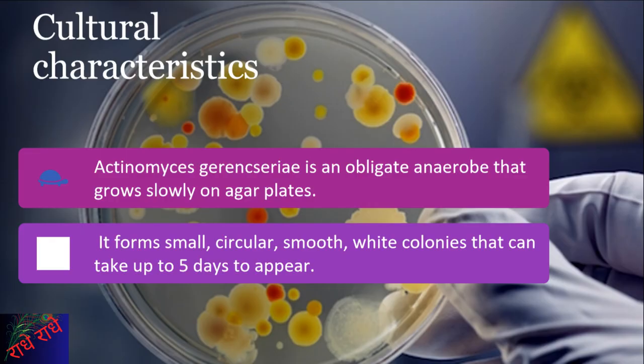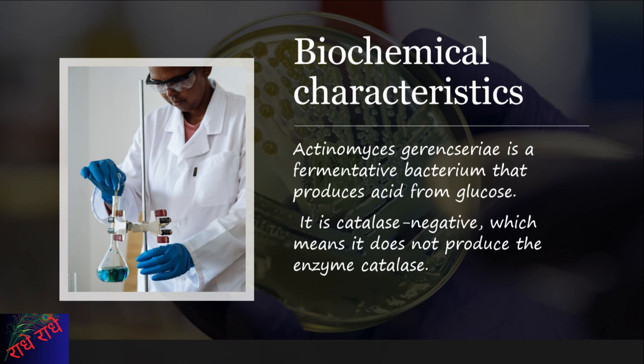Actinomyces garangerii is an obligate anaerobe, requiring an environment that is completely cut off from oxygen. It has a slow growth rate and when grown on agar plates, will produce small, circular, smooth and white colonies that can take up to 5 days to appear. It is a fermentative bacterium that utilizes glucose for energy and produces acid as part of its metabolism. It is also catalase-negative, meaning it does not generate the enzyme catalase, an identifying feature for this type of bacteria.